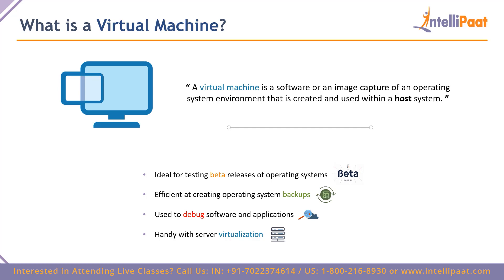Virtual machines are also used to debug applications and software when bugs or errors occur in the operating system. Another key use is server virtualization — if your application requires four or five machines to run, one virtual machine snapshot can be virtualized to appear as multiple machines. This allows you to test applications as if they're running in a full server environment, all from a single host.